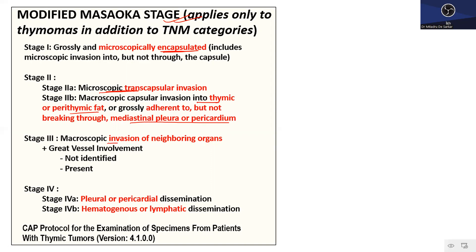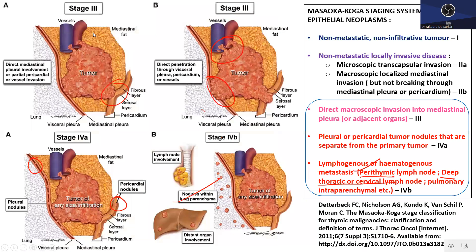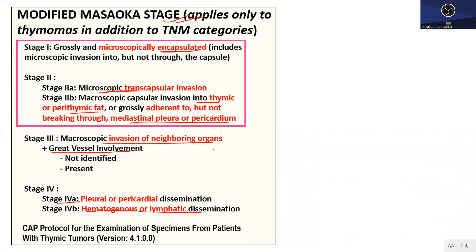In Stage 3, there is macroscopic invasion of neighboring organs contiguous with the mediastinum; great vessel involvement must be mentioned as it carries worse prognosis. Stage 4a is pleural or pericardial dissemination; Stage 4b is hematogenous or lymphatic dissemination. An important thing to note is the presence of a capsule around the tumor, which is critical for staging.